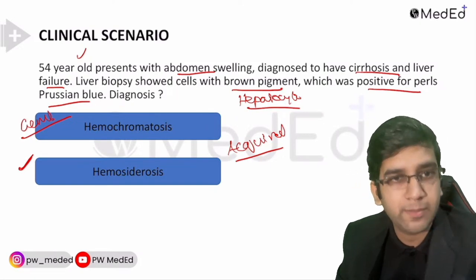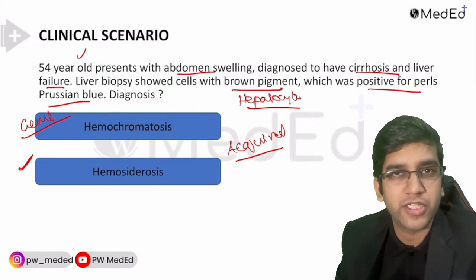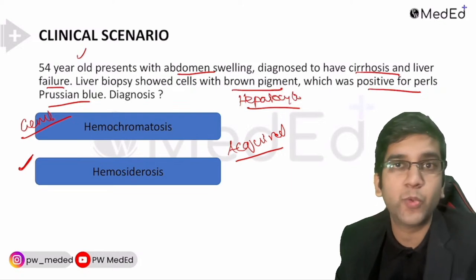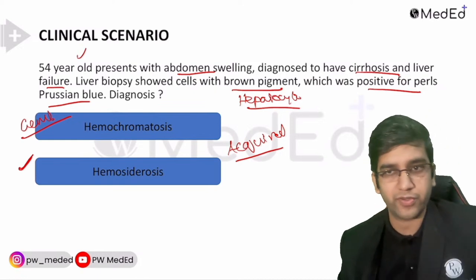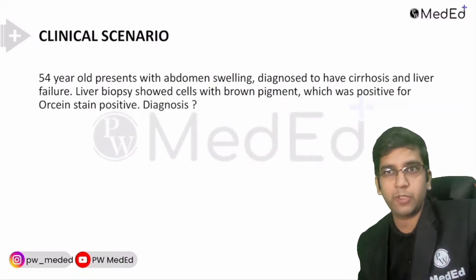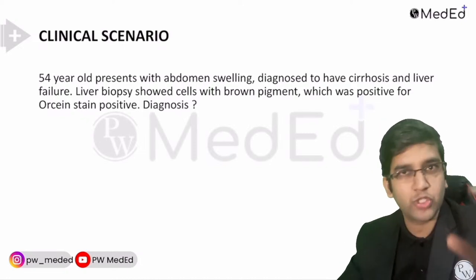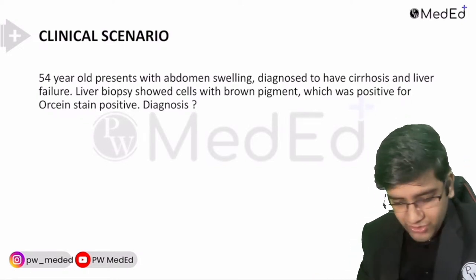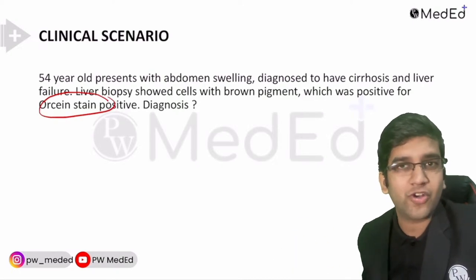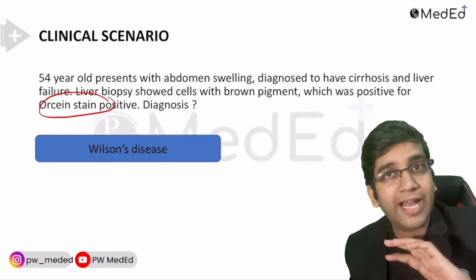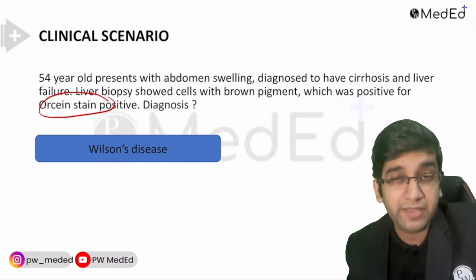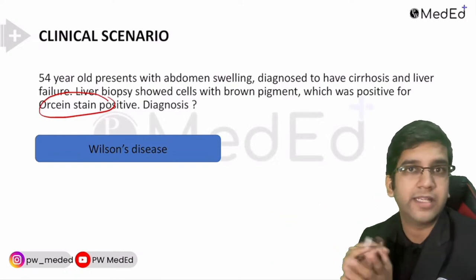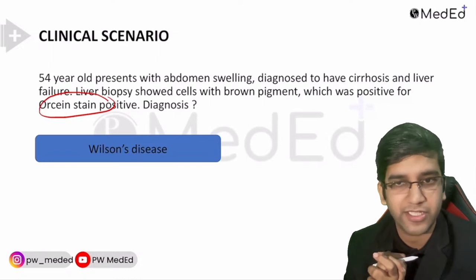54-year-old, abdomen swelling, cirrhosis, liver failure. Liver biopsy shows brown pigment, positive for orcein stain. Same history — only the stain changed. Orcein is for copper, so this is a classical case of Wilson's disease — copper overload. The question may also give you other history like tremors or KF ring, which makes life easier, not harder. I'm making it difficult here so that in the real exam it becomes much, much easier.